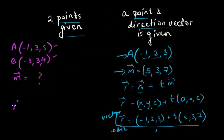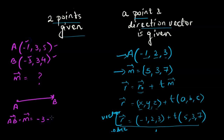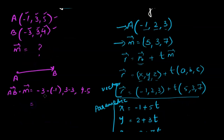Let's say we're making point A the start point and point B the stop point, so the direction vector is going from A to B. The direction vector can be written as AB, and we find it by doing Bx minus Ax — that gives us negative 3 minus negative 1. By minus Ay is 3 minus 3, and Bz minus Az is 4 minus 5. That gives us negative 2, 0, negative 1.